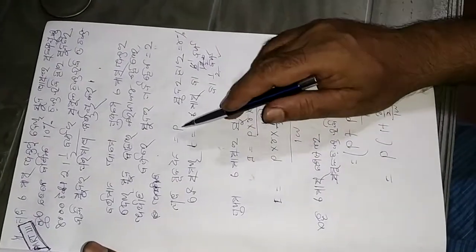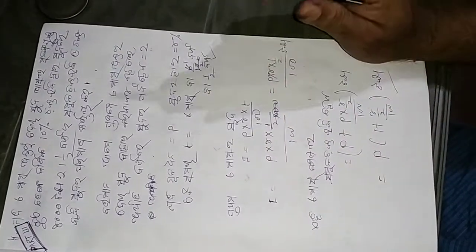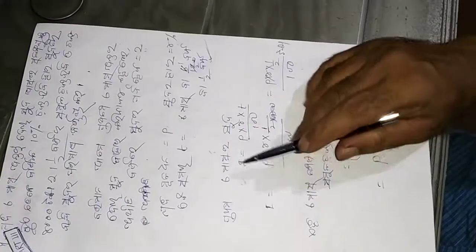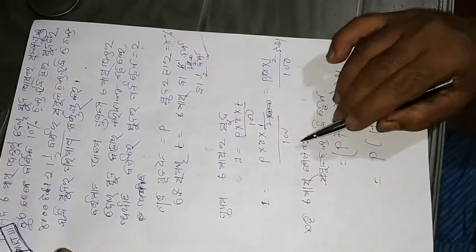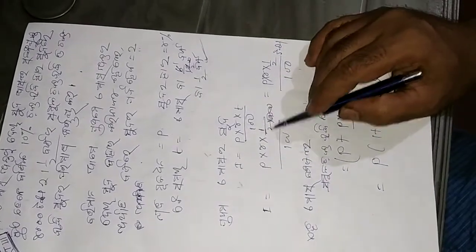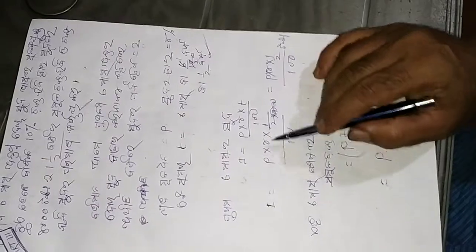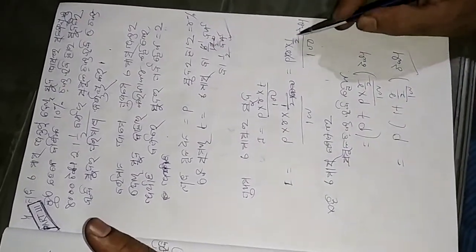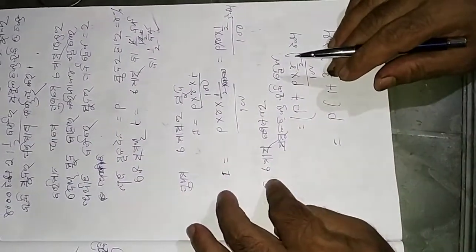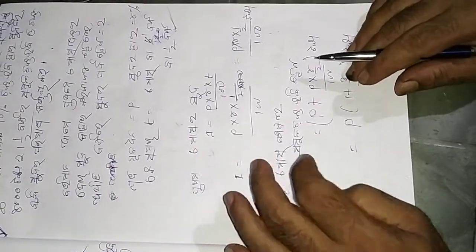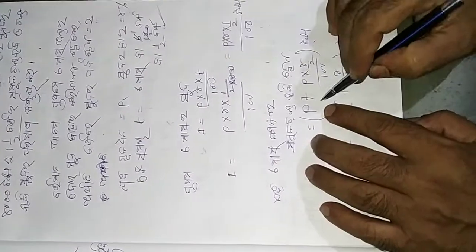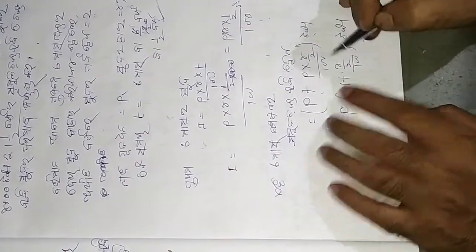This is P, and the rate is 10% per year. So P is my principal. Then, P into R by 2 by 100 gives the interest for six months. This is the interest for the first six-month period.